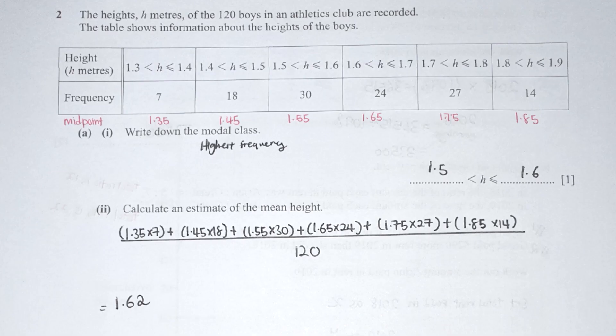Question 2 is pretty straightforward. You need to identify the midpoint whenever height is given in interval format. The midpoints are 1.35, 1.45, 1.55, 1.65, 1.75, and 1.85 respectively. I always calculate the midpoints first as standard practice, since they're needed for mean calculations. The midpoint is found by adding the two boundary values and dividing by 2.